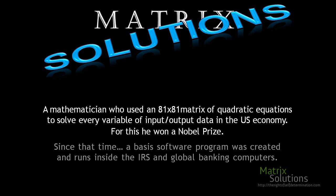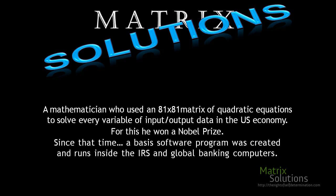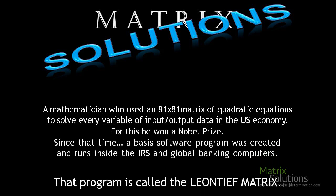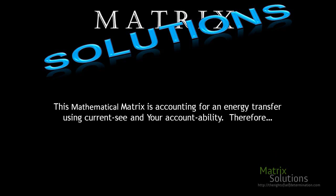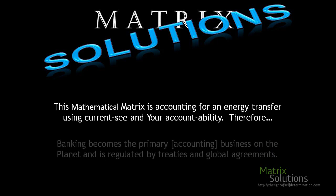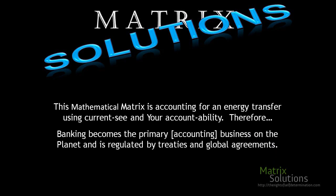For this work, Leontief won a Nobel Prize. Since that time, a base software program was created and runs inside IRS and global banking computers. That program is called the Leontief matrix. This mathematical matrix accounts for an energy transfer — it uses currency and accountability, making banking the primary accounting business on the planet.